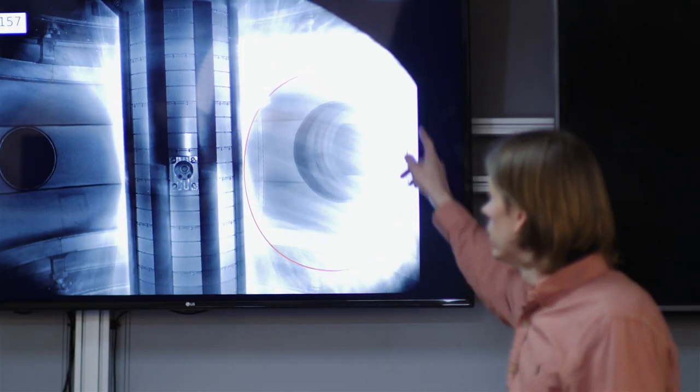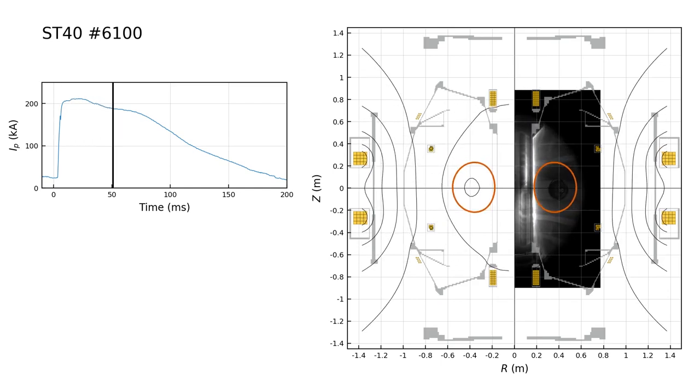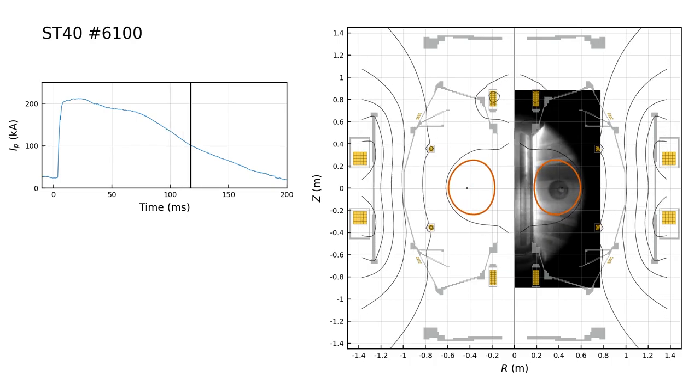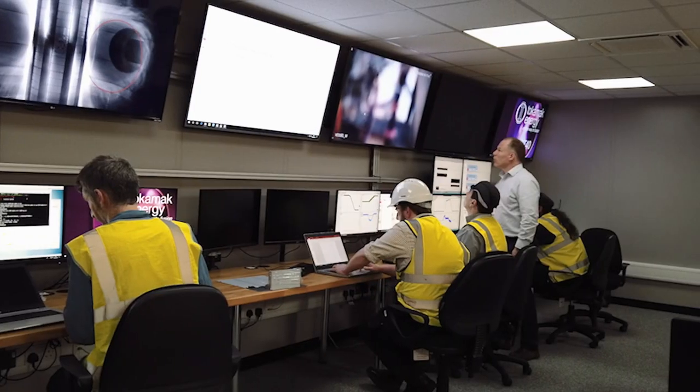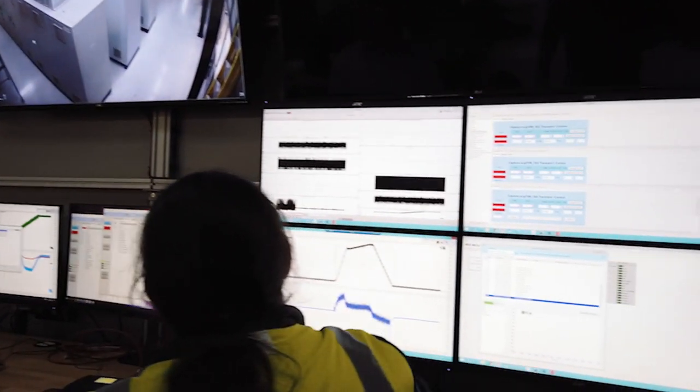Our control loop runs every hundred microseconds so you have quite a few of those in that two second period. You will have time to move it around because it is responding very quickly to our actuator signals which are the power supplies. As we modify the voltages on the coils the plasma will respond.